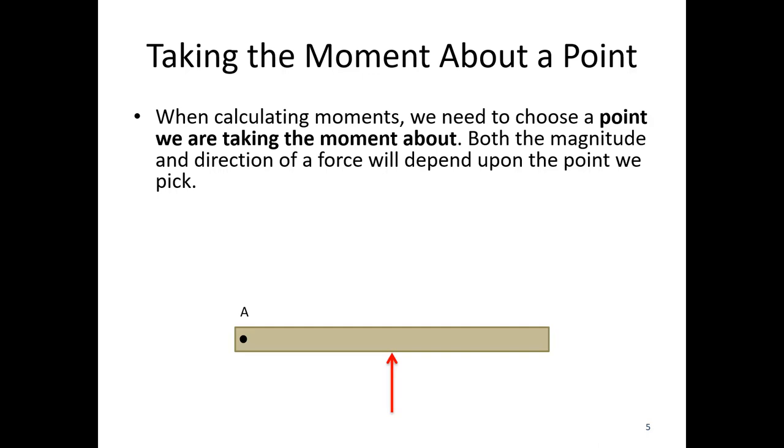Imagine instead, I had the hinge over at point B. So if I put the hinge at point B, I'm taking the moment about that point. Now I've entirely changed the direction. So rather than rotating counterclockwise, I'm going to be rotating clockwise about point B. The direction of the moment depends if I'm taking the moment about point A or point B.